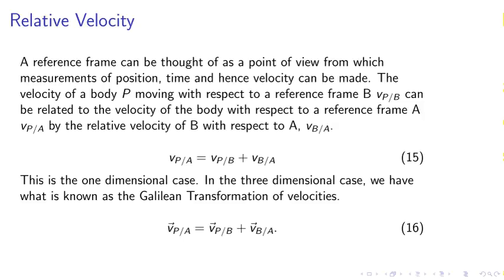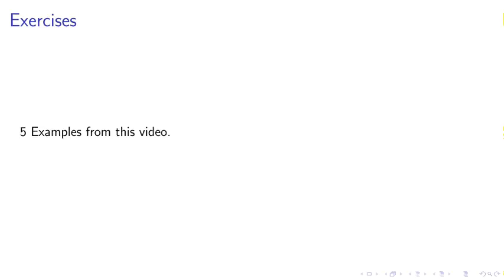Relative velocity. A reference frame can be thought of as a point of view from which measurements of position, time, and velocity can be made. The velocity of a body P moving with respect to a reference frame B, Vpb, can be related to the velocity of the body with respect to the reference frame A by the relative velocity of B with respect to A. Equation 15. This is the one-dimensional case. We will now examine five examples from this video.